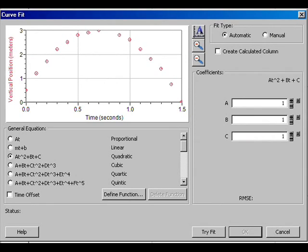Select the type of fit, automatic by default, and general equation you want to try. In this case, I chose Quadratic, AT squared plus BT plus C, since the data looks parabolic. Then click the Try Fit button to see the result.